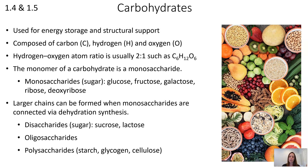You can get larger chains built from those monosaccharides through the process of dehydration synthesis, which is the same process we've seen in the intro to macromolecules. When just two monomers of carbohydrates come together, that's called a disaccharide. Examples include sucrose and lactose. Oligosaccharides are when there are a few monosaccharides connected together, and polysaccharides are when you have many, many monosaccharides connected together — examples are starch, glycogen, and cellulose.